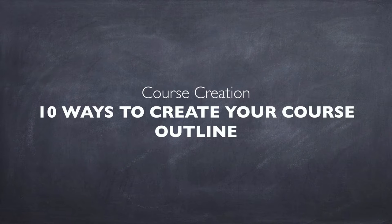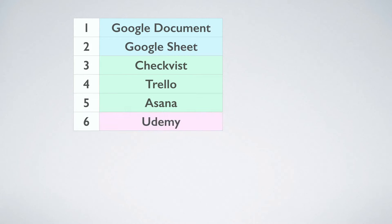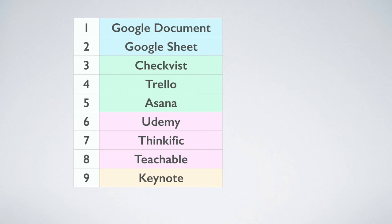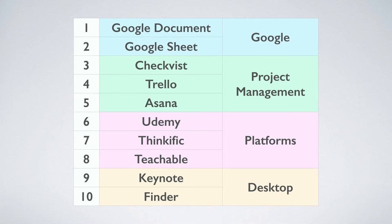10 ways to create your course outline: with a Google Document, Google Sheet, CheckVist, Trello, Asana, Udemy, Thinkific, Teachable, Keynote, and Finder. So we got two tools by Google, three free project management tools, three platforms to upload online courses, and two desktop applications.